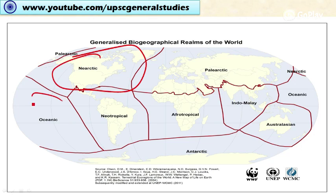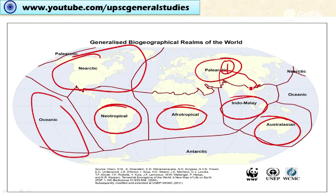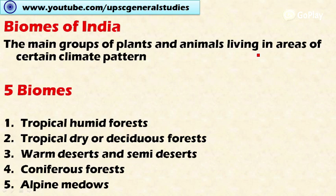Broadly, the earth is divided into eight biogeographical realms: the Nearctic realm, the Oceanic realm, Neotropical realm, Afrotropical realm, Indomalayan realm, Australasian realm, and Palearctic realm. India shares two important realms — the Palearctic realm in the northern part of India, and the Indomalayan realm covering the peninsular region, the Gangetic plains, and northeastern India.